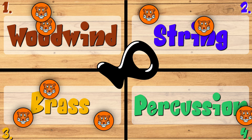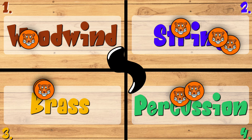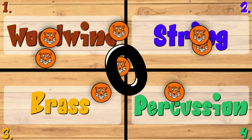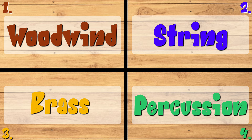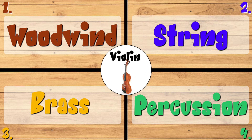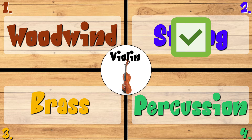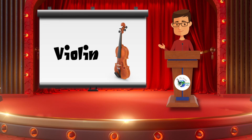Find corner one, two, three, or four. Which family is this instrument a part of? Let's listen again. Show with your fingers the family corner the instrument is in. The violin is part of the string family. So if you are in the string family corner, sorry, you are out.